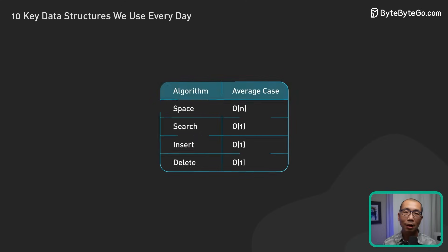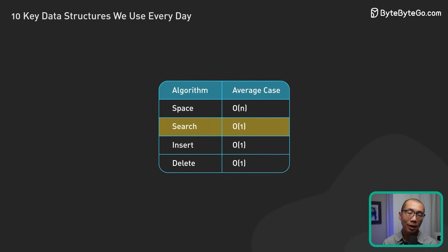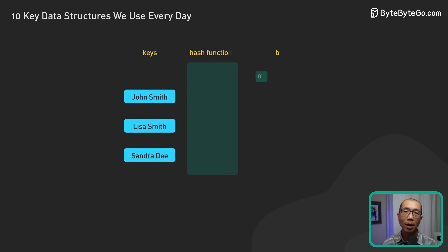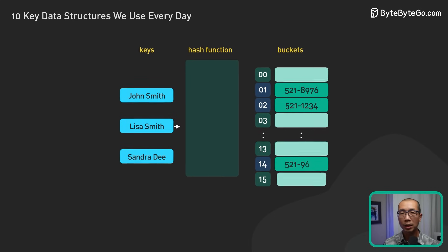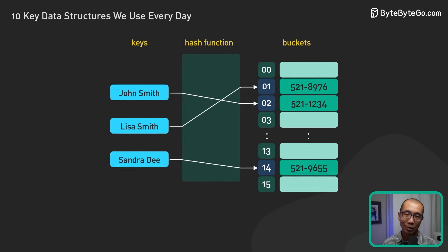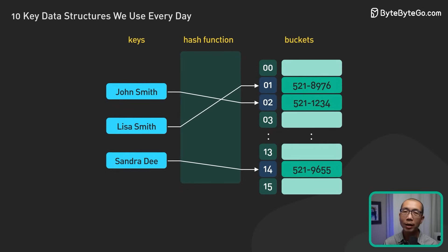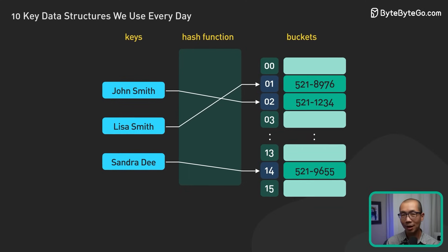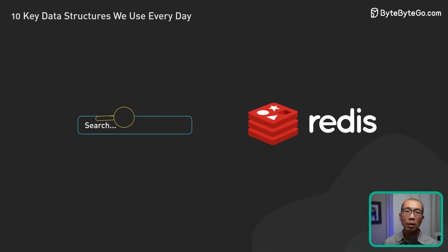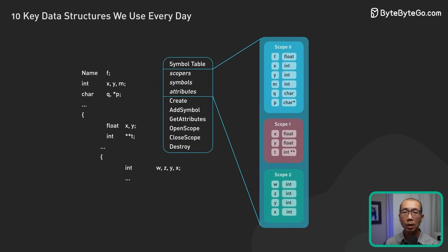Hash tables allow for efficient data lookup, insertion, and deletion. They use a hash function to map keys to their corresponding storage locations. It enables constant time access to the stored values. Hash tables are widely used in various applications, such as search engines, caching systems, and programming language interpreters or compilers.